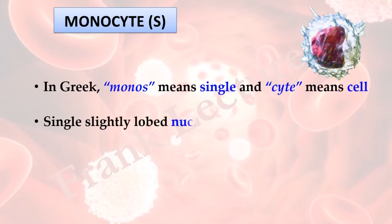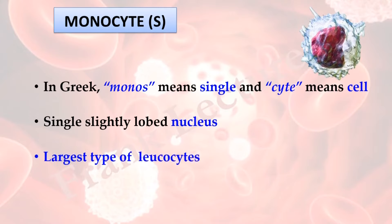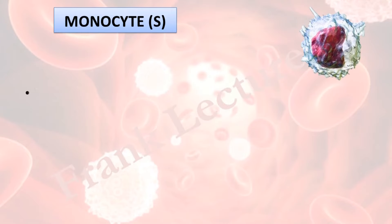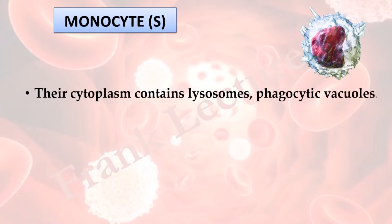Agranulocytes are of two types: monocytes and lymphocytes. In Greek, 'monos' means single and 'cyte' means cell. Monocytes have a single, slightly lobed nucleus; the shape of the nucleus resembles a kidney or bean shape. Monocytes are the largest type of leukocytes. Their cytoplasm contains lysosomes and phagocytic vacuoles, which means monocytes are phagocytic cells.